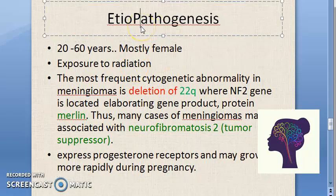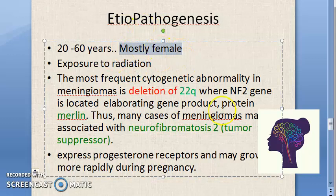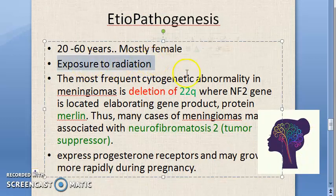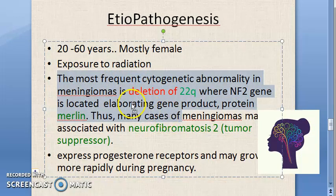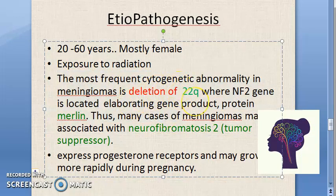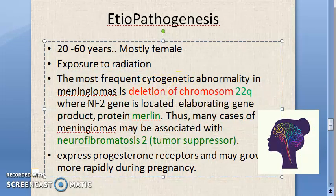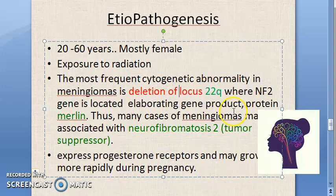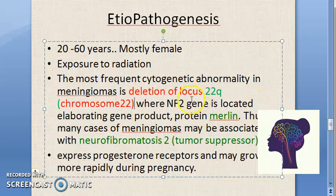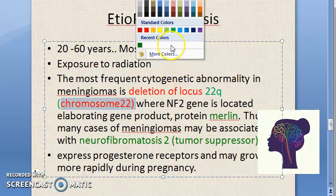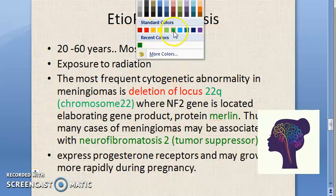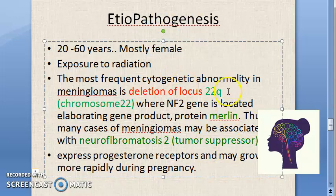Regarding etiopathogenesis: meningioma occurs mostly in adults, mostly in females, and radiation exposure is a risk factor. The key genetic change involves chromosome 22 - there is a locus 22q on chromosome 22, and more details can be found in the textbook.